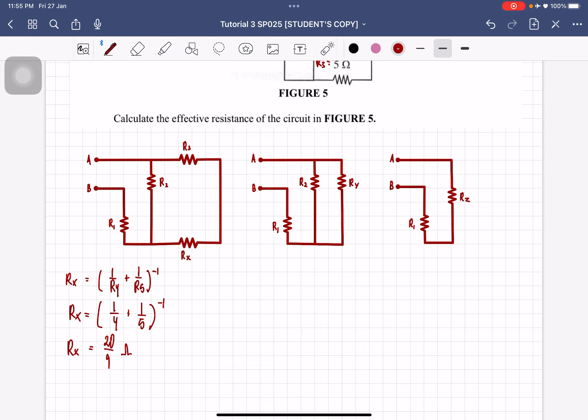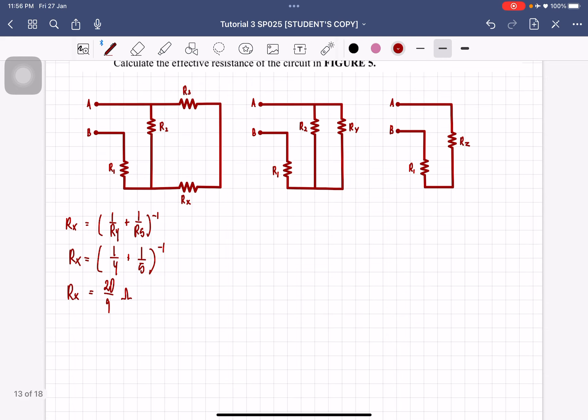So this is equal to 20 over 9 ohms. So always keep it in fraction if possible, because if you round it off directly, you could get a value that is a bit different than the final answer scheme. Sometimes you would round it off to two decimal points, sometimes one, and usually if you take three decimal points, you'll get the same answer as the final answer scheme. Just make sure to keep it in fraction so it's more accurate.